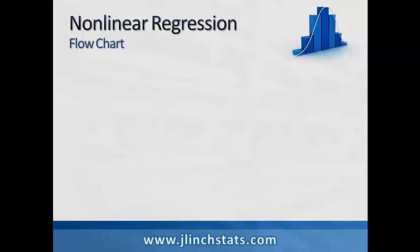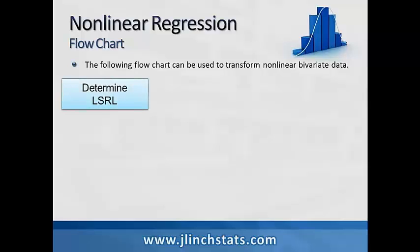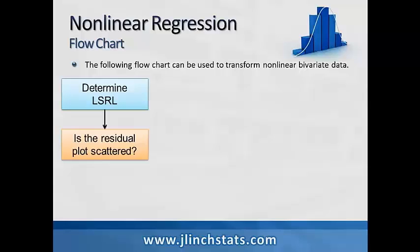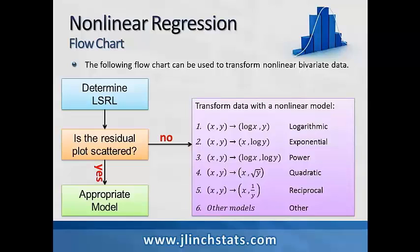Now let's consider the following flowchart, which can be used to transform nonlinear bivariate data. When we have bivariate data, the first thing we want to do is determine the least squares regression line. We're going to ask ourselves: is the residual plot randomly scattered about zero? If it is, then we have an appropriate linear model. However, if our residual plot is not randomly scattered, we need to consider one of the five nonlinear transformations — or option six, since there are other models and methods we can use. Once we choose a transformation with a new nonlinear model, we again determine the least squares regression line and go back through the flowchart.